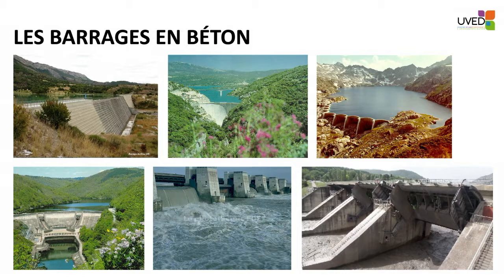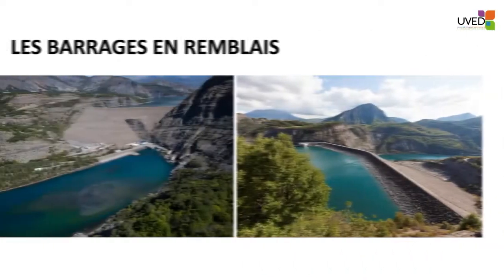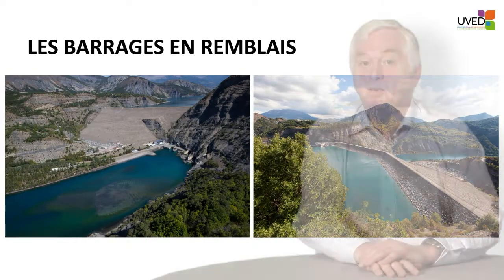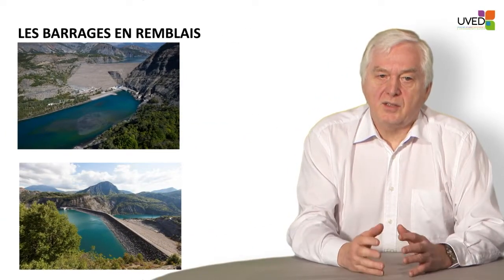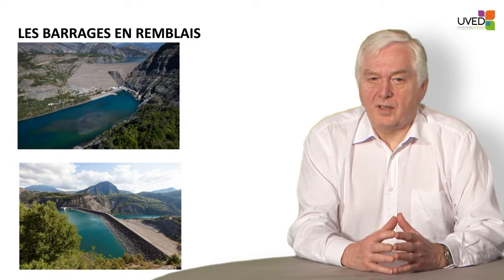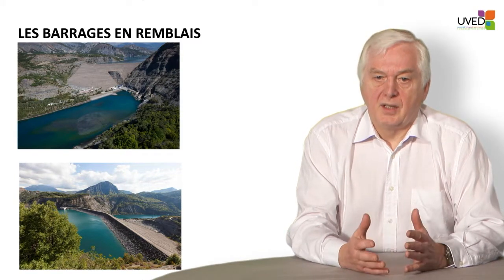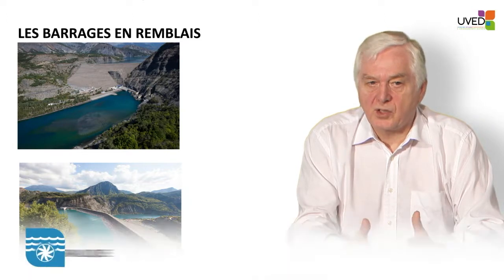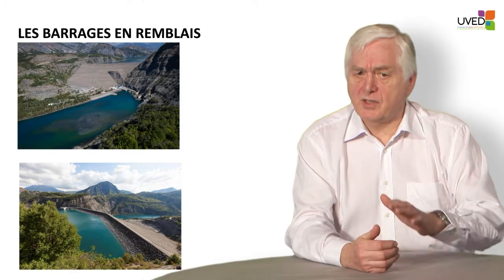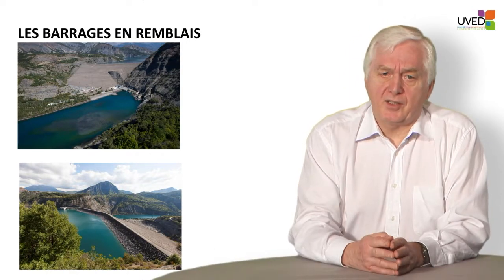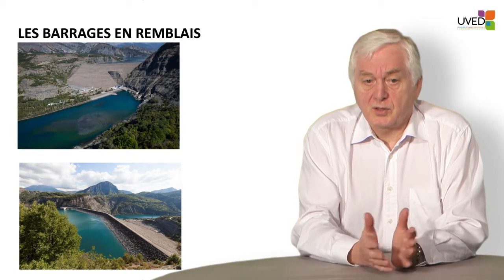For low head dams on the Rhône or Rhine River, there are pods built into the river and each pod is connected by a vein which is opened or closed depending on how much flow is needed. Another kind of dam is the embankment dam, which opposes the water pressure. Most of the time these fill-in embankment dams are made from waterproof material, either a clay core at the center of the dam or a waterproof membrane placed on the upstream side of the dam.